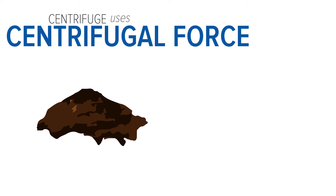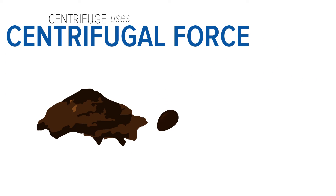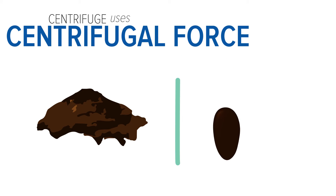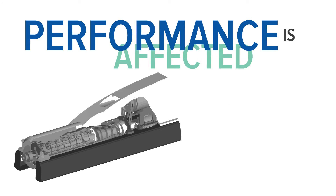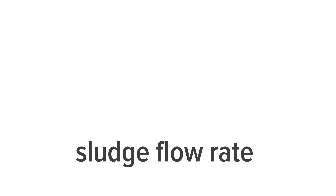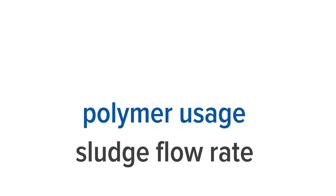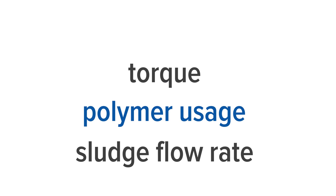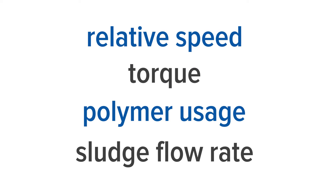The centrifuge uses centrifugal force to separate the solid from the liquid, and the performance is affected by the sludge feed rate, polymer dosing rate, the torque, and the relative speed between the bowl and the scroll.